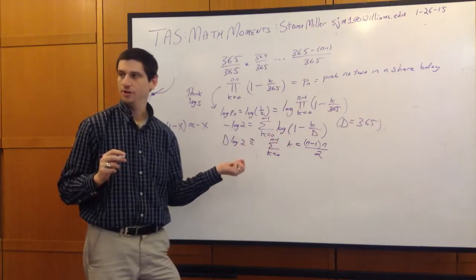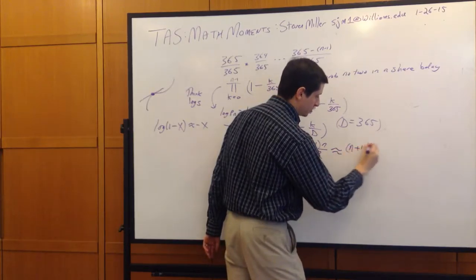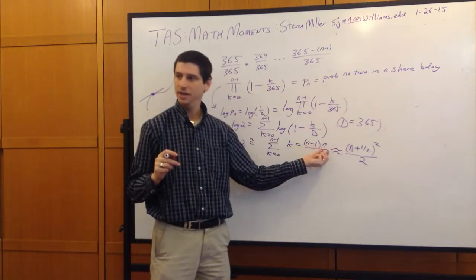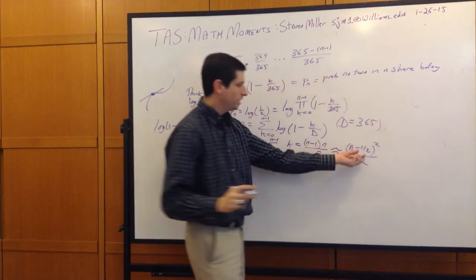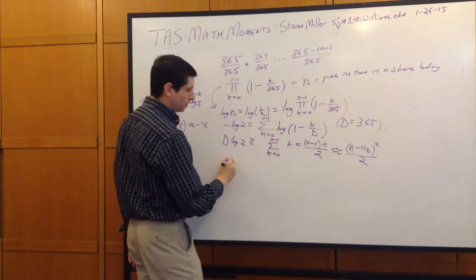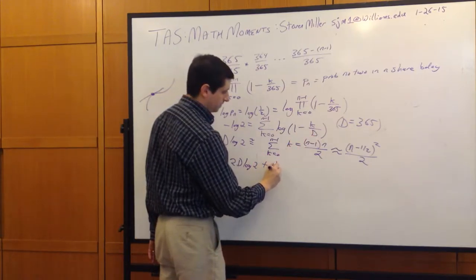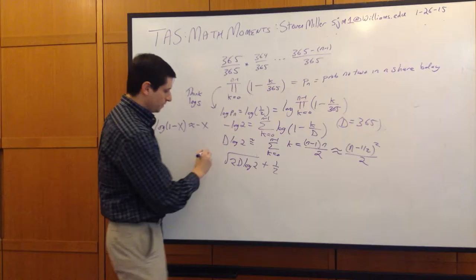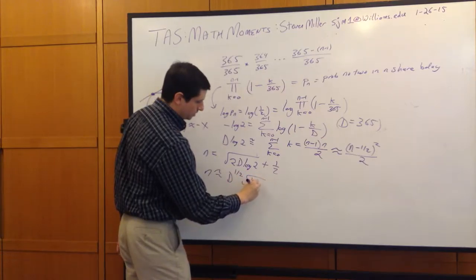This gives us a quadratic formula for n to solve. Making one more approximation, we can write it as (n minus one-half) squared over 2. Solving, we get n approximately equal to the square root of (2d log 2) plus one-half — or more compactly, n is approximately d to the one-half times the square root of log 4.